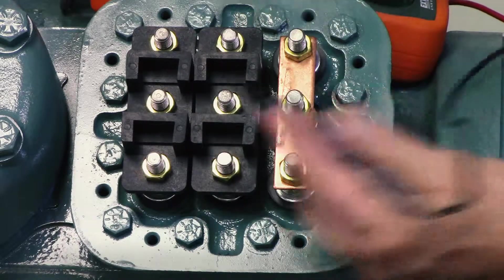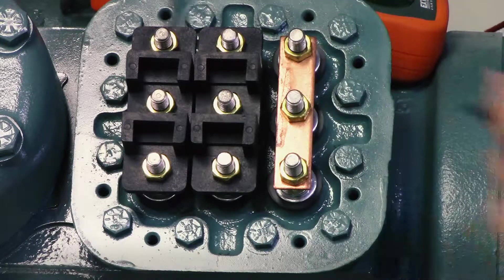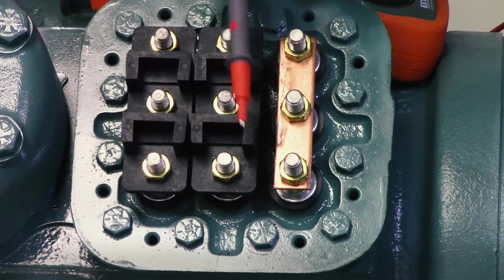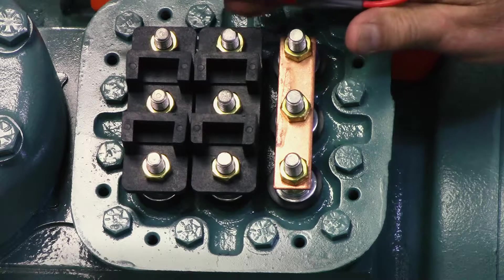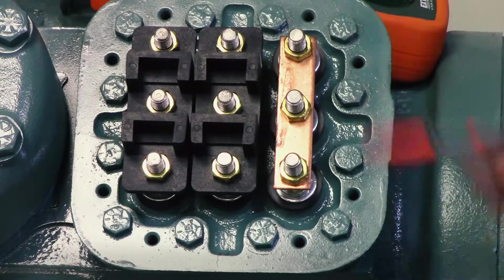Once you have that, you're all set to put your six wires on. You have contactor one and contactor two, and these are your phases. One and seven, two and eight, three and nine are the same phases.